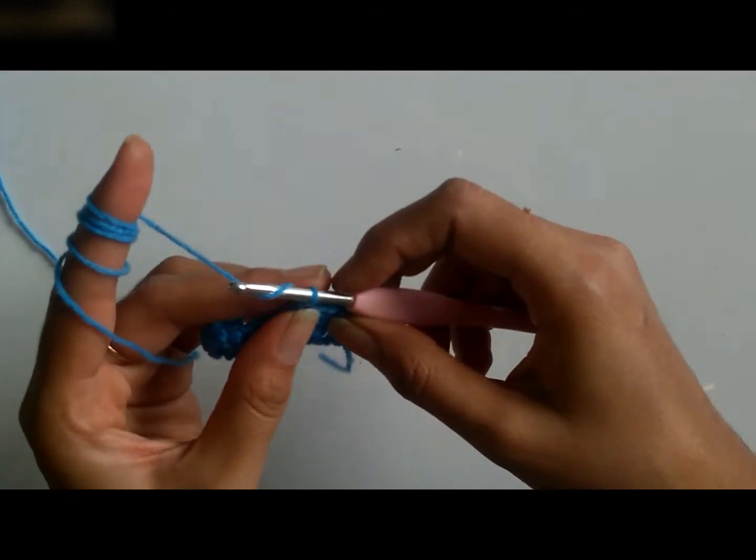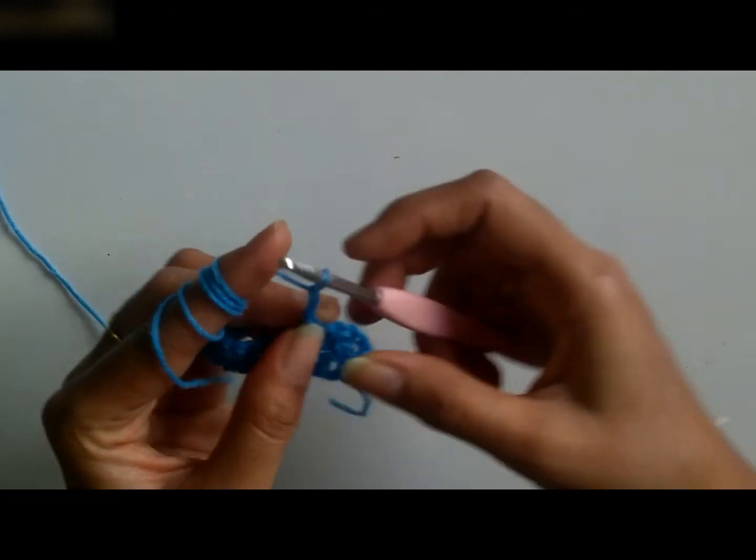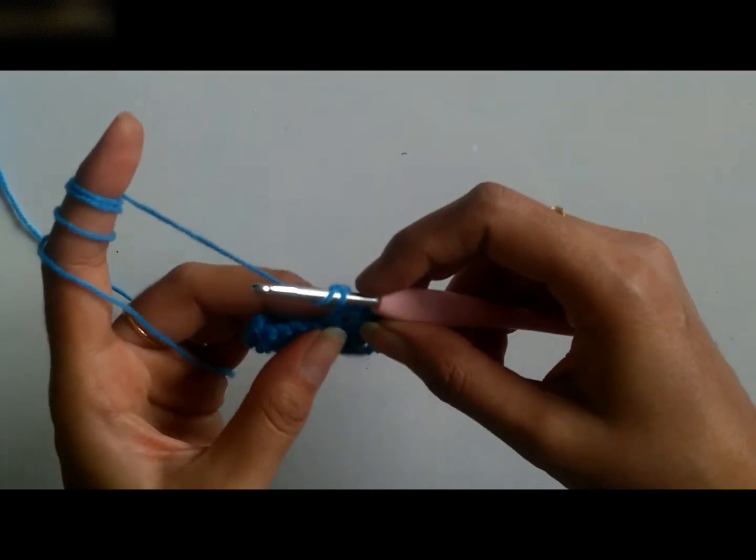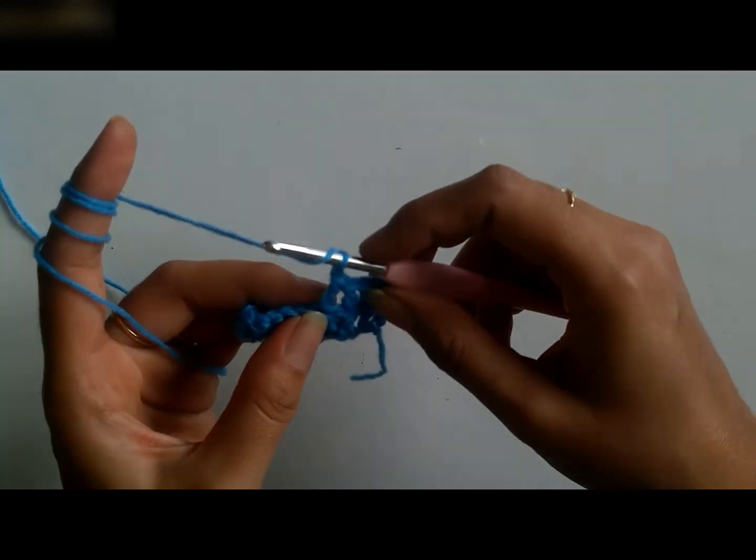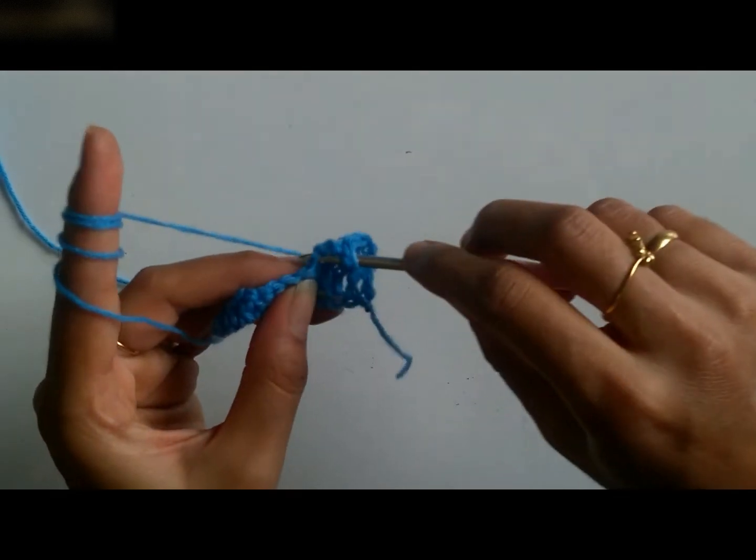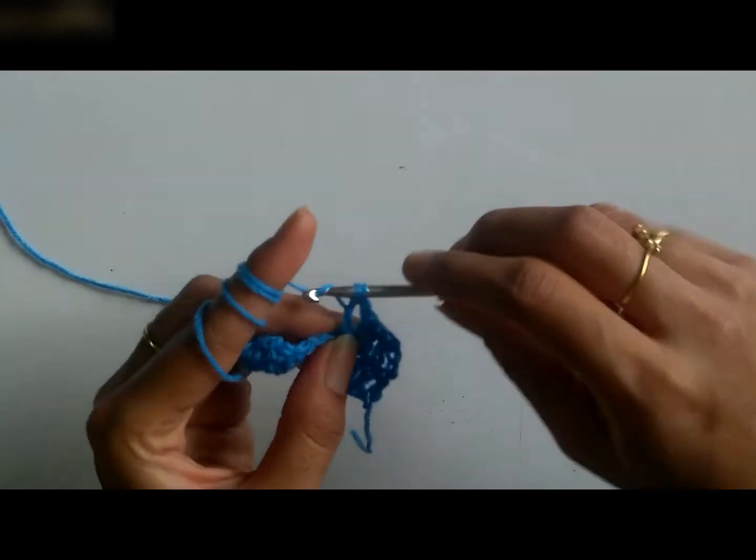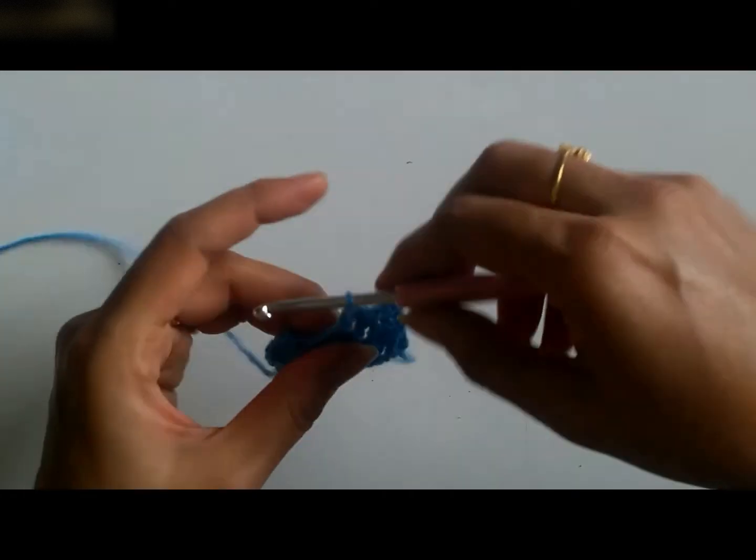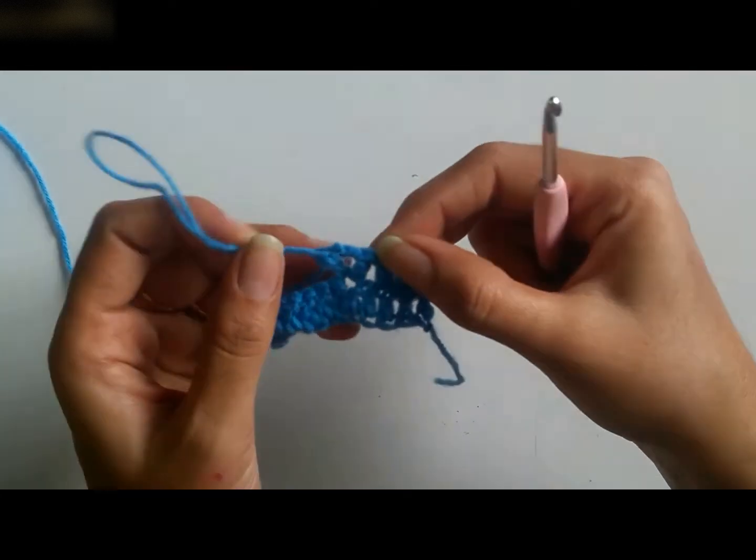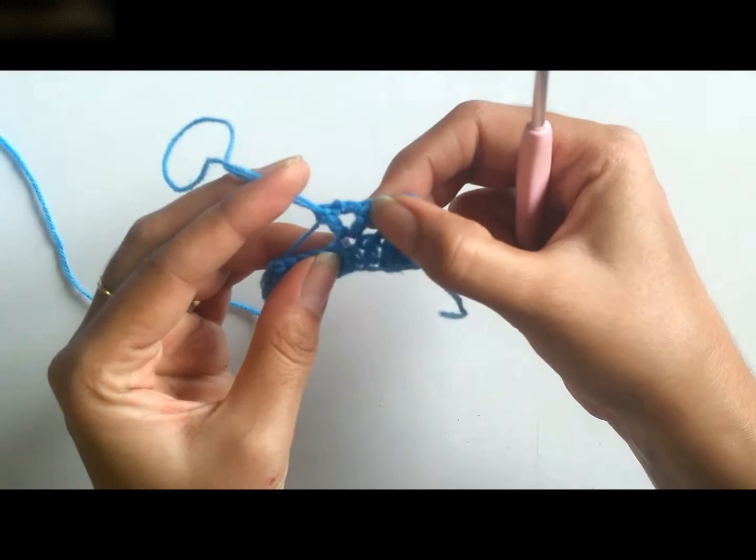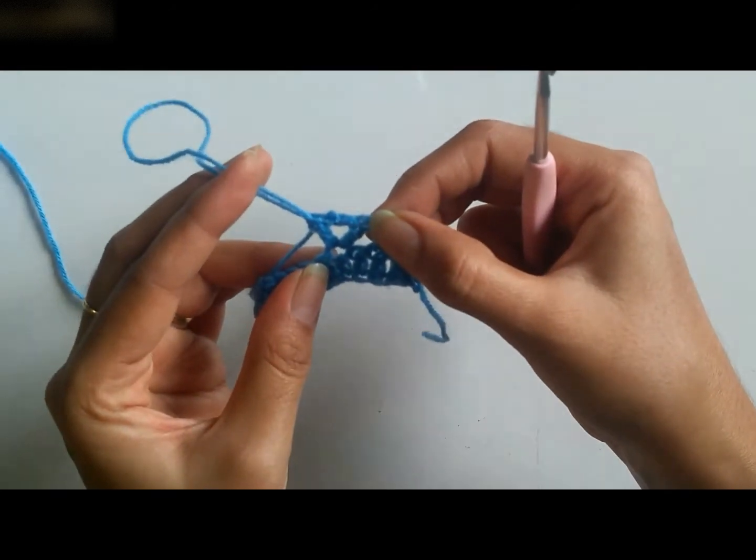Then I need to chain either one or two as per my stitches or a design that I am making. And then again make one more double crochet inside the same stitch. So as you can see a V-shape design is getting formed. So this is a very simple stitch.